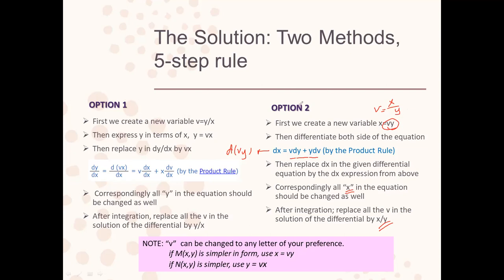The five-step rule is: (1) choose the substitution equation; (2) change the derivative/differentials accounting for the substitution; (3) change all variables using the substitution; (4) solve, typically by separation of variables and integration; (5) return v to its original form — either y/x or x/y depending on the option used. Both options yield the same solution provided algebra, integration, and simplification are done correctly.